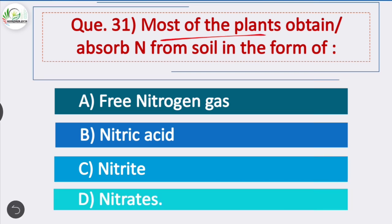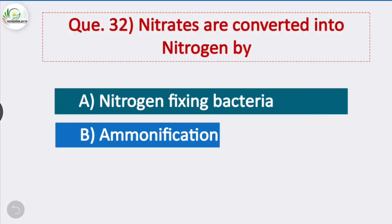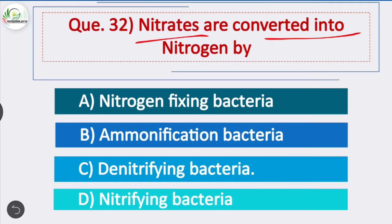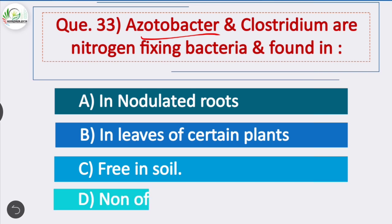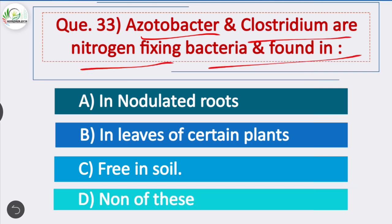Question 31: Most plants obtain or absorb nitrogen from the soil in the form of — most plants obtain nitrogen from the soil in the form of nitrates — option D is correct. Question 32: Nitrates are converted into nitrogen by — option C is correct — denitrifying bacteria. Question 33: Azotobacter and Clostridium are nitrogen-fixing bacteria found in — option C is correct — free in soil. These are non-symbiotic nitrogen fixers found free in the soil.